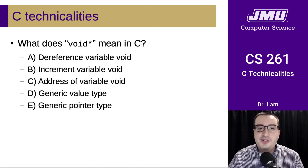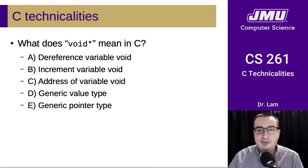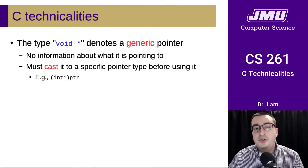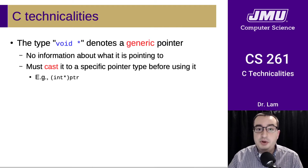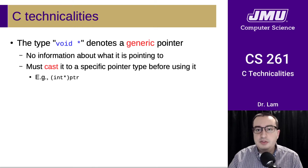What does void star mean in C? If I were to show you the code `void*`, what does that mean? It turns out that void star is a particular type of pointer — a generic pointer. We don't have any information about what it's pointing to. This can be useful in certain circumstances, but in general it's something we want to avoid in this course because it can lead to using pointers incorrectly.